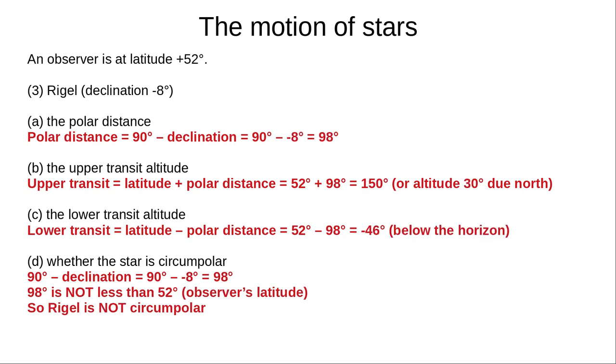And finally, Rigel's polar distance is 90 degrees minus negative 8 degrees, or 98 degrees from the north celestial pole. Upper transit is at 52 degrees plus 98 degrees equals 150 degrees, or 30 degrees due south. Lower transit is at 52 degrees minus 98 degrees equals minus 46 degrees, below the horizon. And 90 degrees minus negative 8 degrees equals 98 degrees. This is not less than 52 degrees, the observer's latitude. And, as we noted, the lower transit is negative, below the horizon. Rigel is not circumpolar.